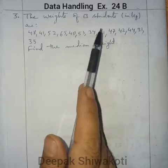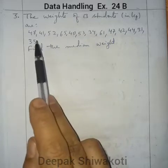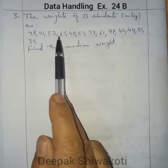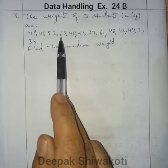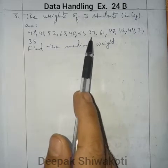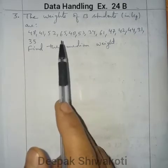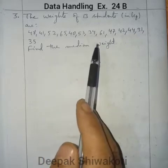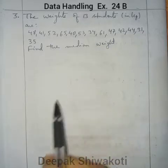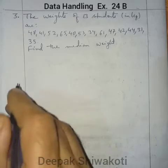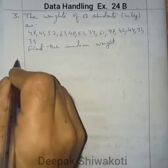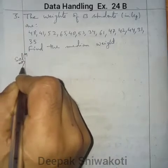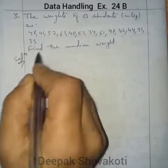The weights of 13 students are: 48, 41, 52, and so on — these are all the weights in kg of 13 students. We have to find the median weight. First, we will arrange them in ascending order.